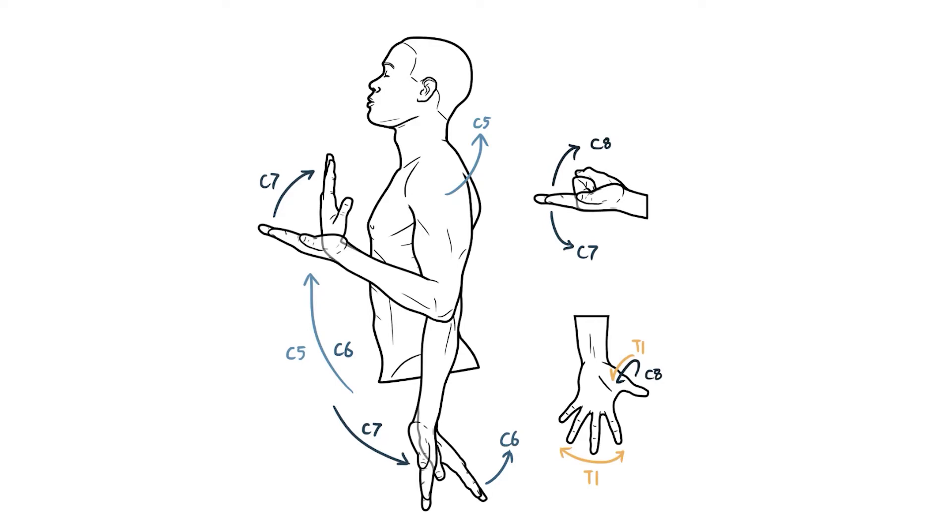Damage to a nerve root can impact all of the movements it controls. For example, if C6 was injured, you'd expect to see significant weakness in wrist extension. However, some movements such as elbow flexion are controlled by two nerve roots. In these cases, damage to one of the nerve roots will make the movement weaker, but it shouldn't be lost completely.